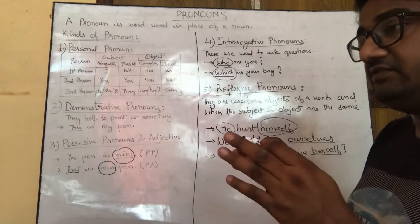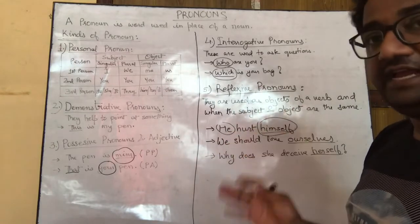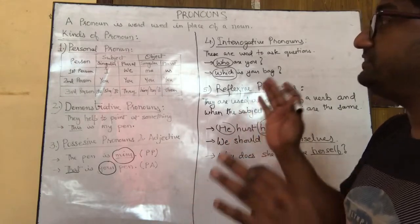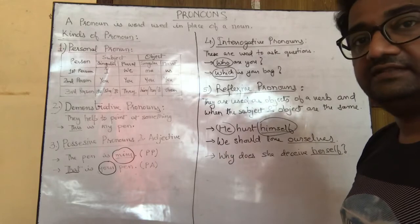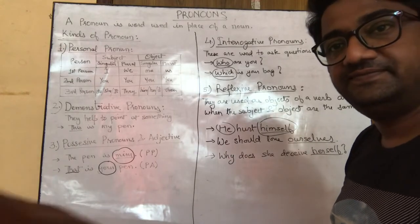This completes types one to five of the kinds of pronouns. Overall there are nine types. We will cover types six to nine in the next class, next week. Thank you, class.